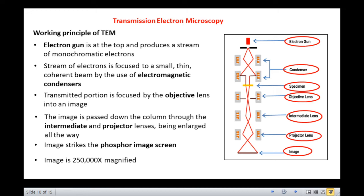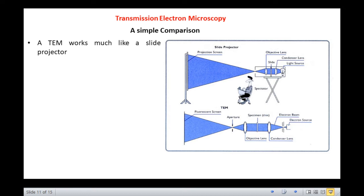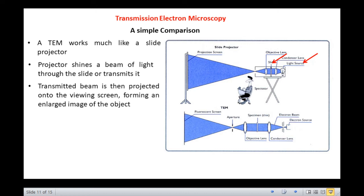The TEM has been compared to a slide projector. So let us compare the transmission electron microscope to that of a slide projector that is used in cinema houses. A TEM works much like a slide projector. A projector shines a beam of light through the slide, and as the light passes through it, it is affected by the structures and objects on the slide. These effects result in only certain parts of the light beam being transmitted through certain parts of the slide. This transmitted beam is then projected onto the viewing screen, forming an enlarged image of the object.